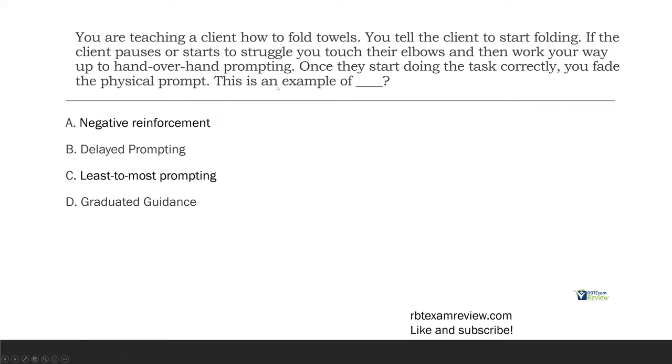You're teaching a client how to fold towels. You tell the client to start folding. As the client pauses or starts to struggle, you touch their elbows and then work your way up to hand-over-hand prompting. Once they start doing the task correctly, you fade the physical prompt. This is an example of blank. What type of prompting do we just use physical prompting as much as necessary and then we fade immediately? It's clearly a prompting scenario, so we can eliminate A, negative reinforcement.